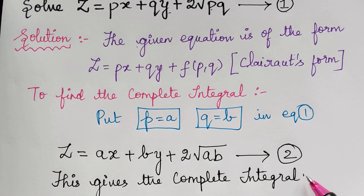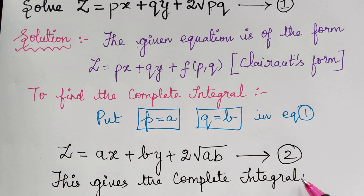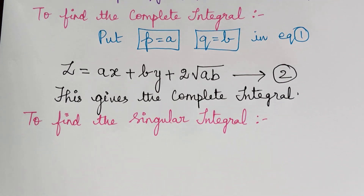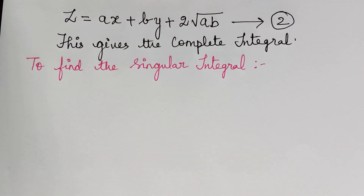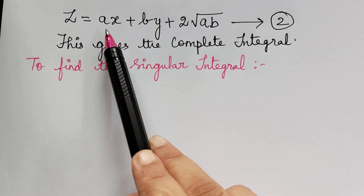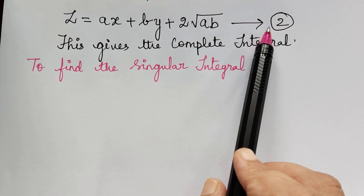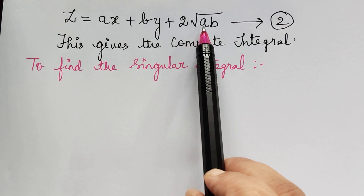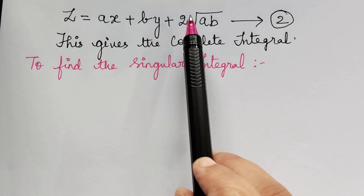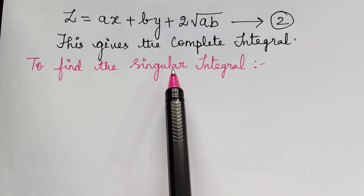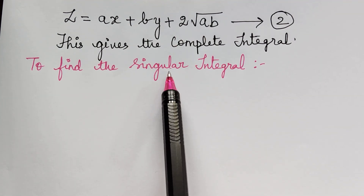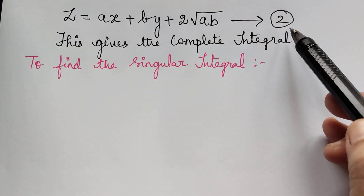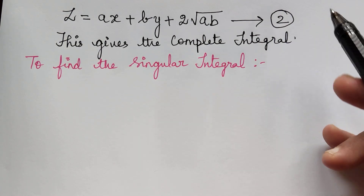The next step is to find the singular integral. To do so, we eliminate the arbitrary constants a and b from equation 2. We differentiate equation 2 partially with respect to a and b.